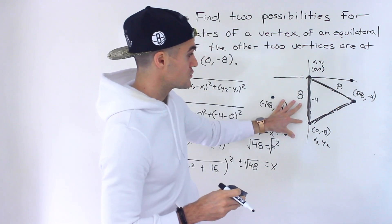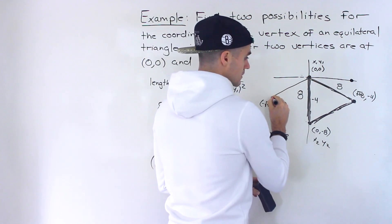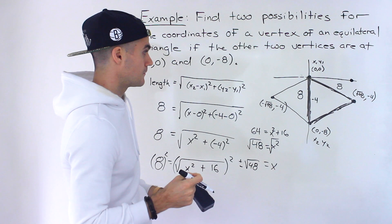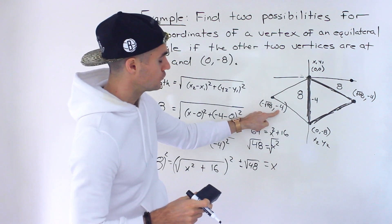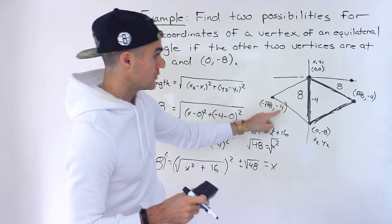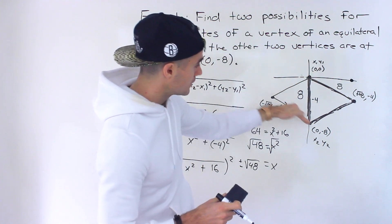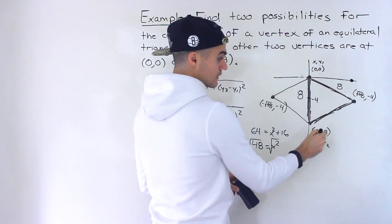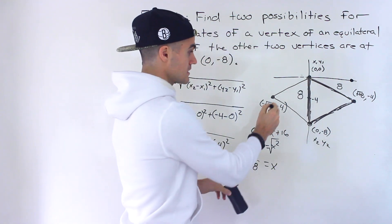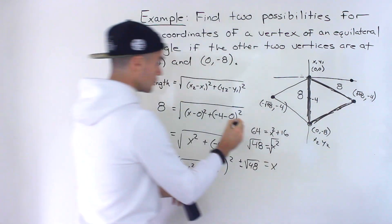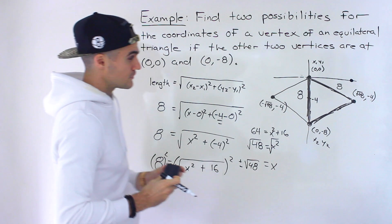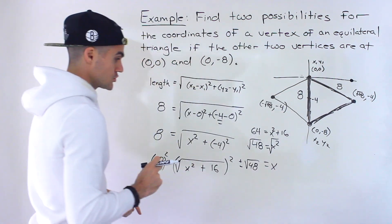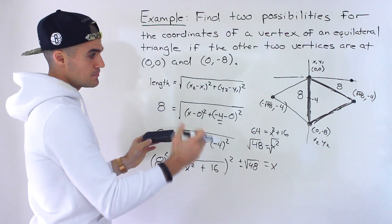So those are the two possibilities. If this equilateral triangle has these two vertices, with these two possibilities you would have two equilateral triangles. Kind of a tricky question. Again, it's possible because we were able to get this y value because we had this vertical line here. And so to draw out an equilateral triangle, we know that the y value of this third point has to be between zero and negative eight.